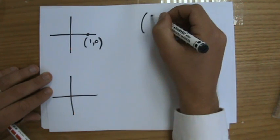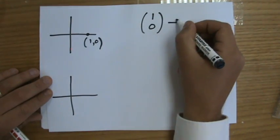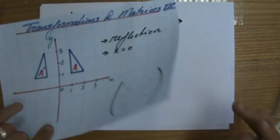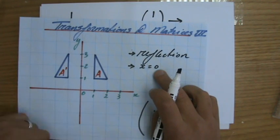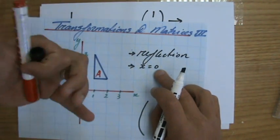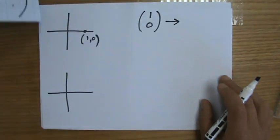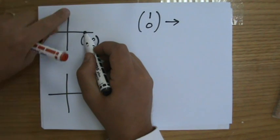First of all, you're going to do it for this point, which is point (1,0). If I write that as a column vector (1,0), what will happen with this point after a reflection in the y-axis? It's important that you first determine the type of transformation happening.